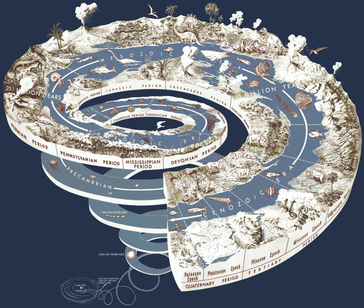Geochronology is the science of determining the age of rocks, fossils, and sediments using signatures inherent in the rocks themselves. Absolute geochronology can be accomplished through radioactive isotopes, whereas relative geochronology is provided by tools such as paleomagnetism and stable isotope ratios. By combining multiple geochronological indicators, the precision of the recovered age can be improved.